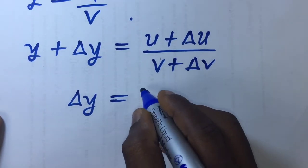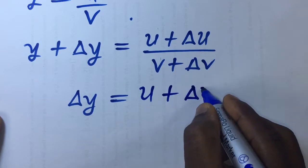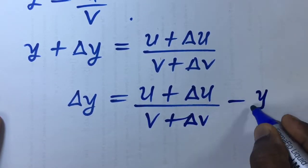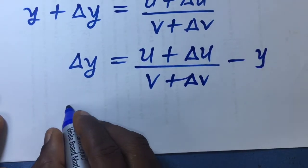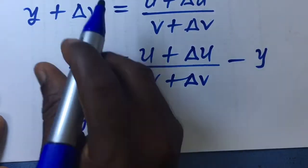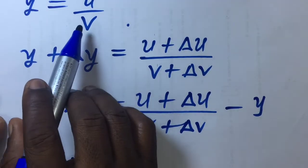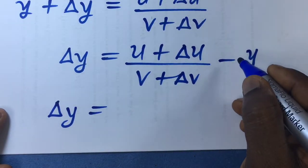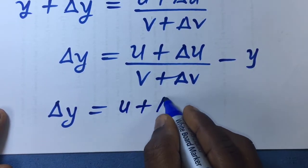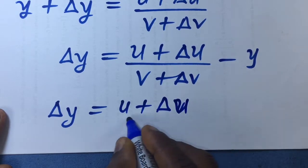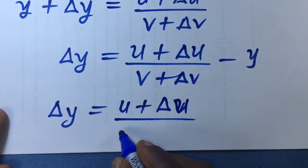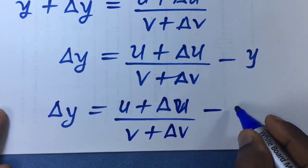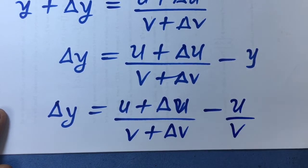Delta y equals u plus delta u, all over v plus delta v, minus y. We have already been given y to be u over v, so we replace y with u over v. This remains u plus delta u all over v plus delta v, and in place of y we put u over v.